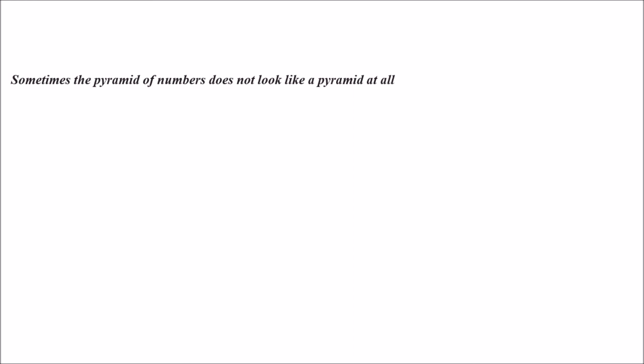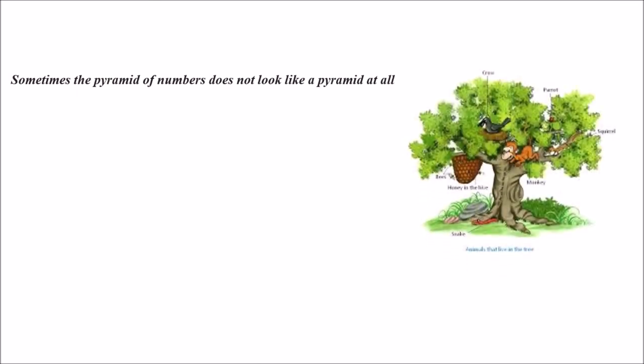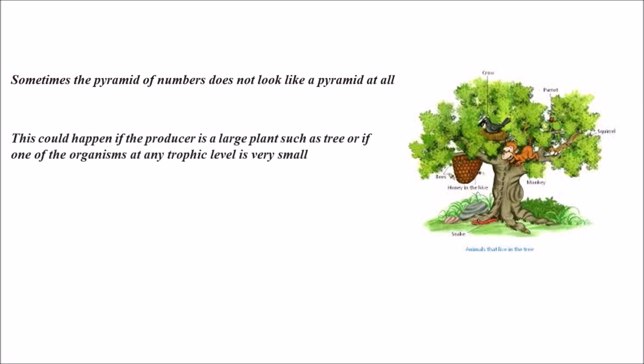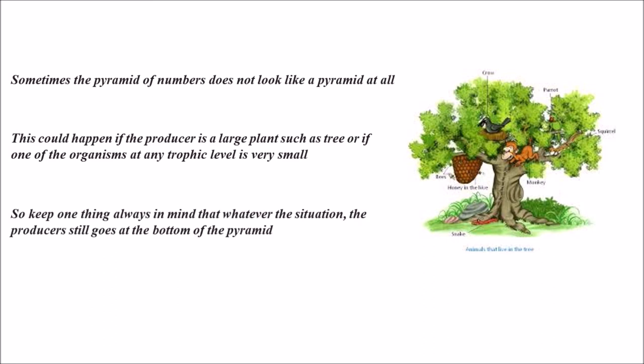Sometimes the pyramid of numbers does not look like a pyramid at all. This can happen if the producer is a large plant such as a tree, or if one of the organisms at any trophic level is very small. In a tree ecosystem, the producer itself is large and the consumers will be fewer in number. But always keep in mind: whatever the shape, the producer is always placed at the bottom of the pyramid.